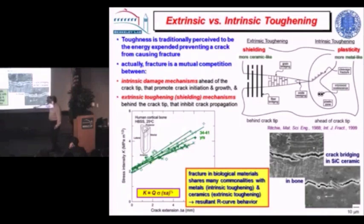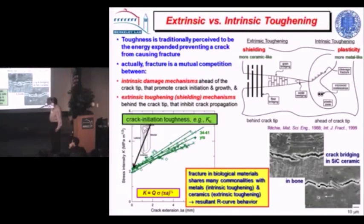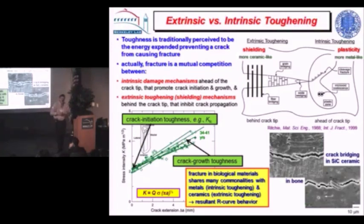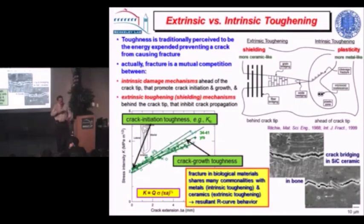We have R-curves where the stress intensity — a measure of toughness, K1C — is most often characterized at crack initiation. But cracks grow stably, and there's a large portion of toughness called the crack growth toughness which originates from these extrinsic mechanisms. This competition is prevalent in all materials, but particularly in biological ones. In ceramic composites there isn't any intrinsic toughening or ductility — we have to live by these extrinsic mechanisms.